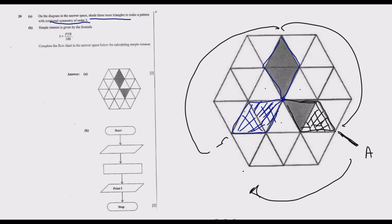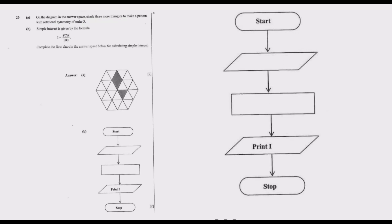Let us move to question 20B. Simple interest is given by the formula: Interest equals Principal times Time times Rate over 100. Complete the flowchart in the answer space below for calculating the simple interest. The flowchart starts with 'Start,' and the output is Interest (I), so the key inputs are P, T, and R.